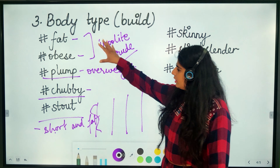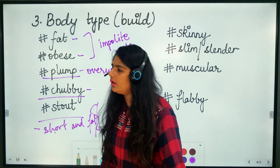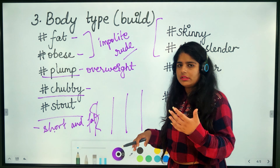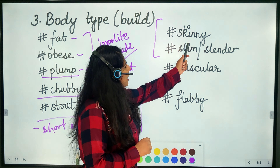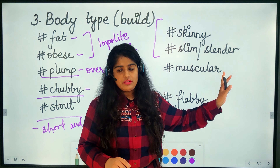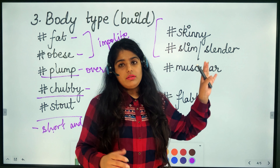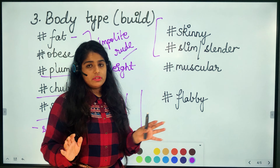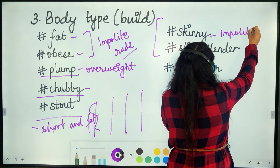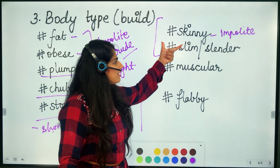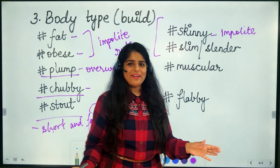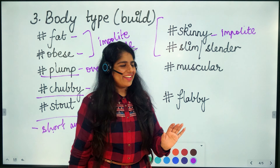Now for words describing a lighter-weight person. 'Skinny' means very thin, but this is also impolite — you can't say directly to someone 'you're too skinny.' Instead, use 'slim' or 'slender,' which are polite alternatives. People feel good being called slim, as it suggests they are fit and healthy.